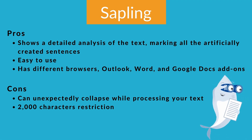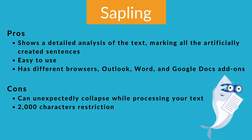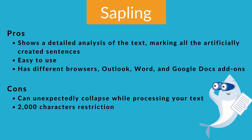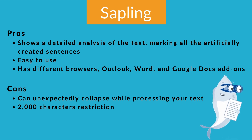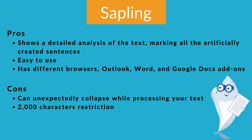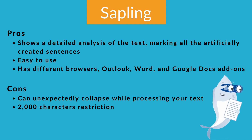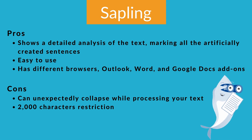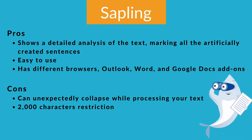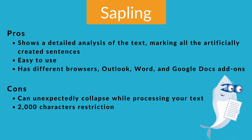Pros: Shows a detailed analysis of the text, marking all artificially created sentences. Easy to use. Has different browser add-ons including Outlook, Word, and Google Docs. Cons: Can unexpectedly collapse while processing your text. 2,000 character restriction.